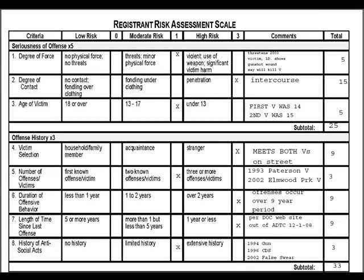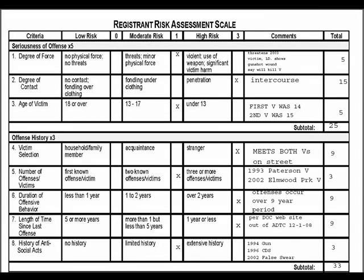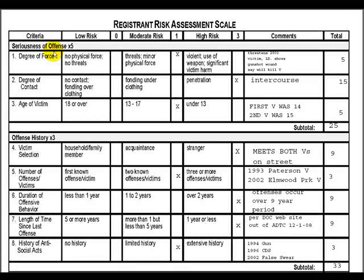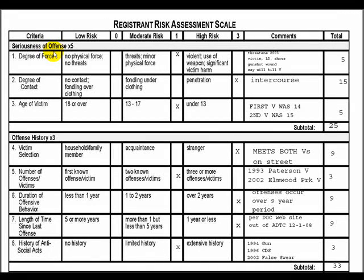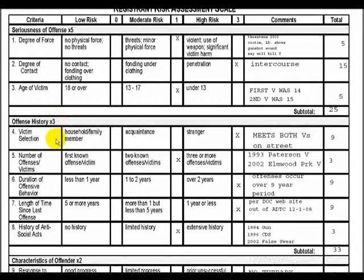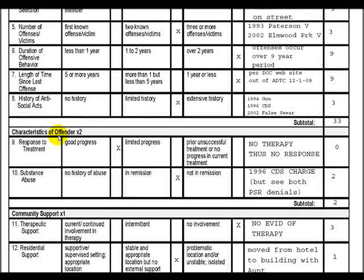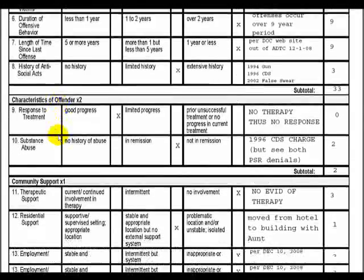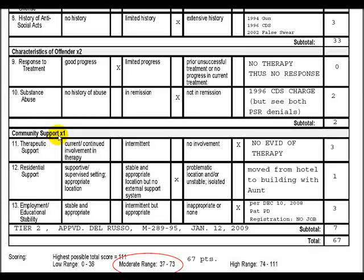Consider this an orientation. You will see on the screen now a Registrant Risk Assessment Scale that has been completed for a sex offender who was recently released from prison. The scale is broken down into a number of parts: the first category is seriousness of offense, the second is offense history, the third is characteristics of the offender, and the last category is community support.